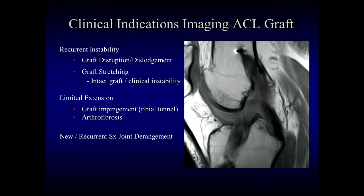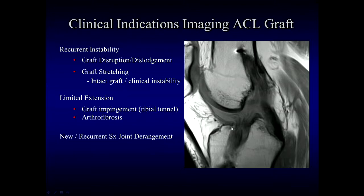Clinical indications for MR imaging after ACL reconstruction include recurrent ACL instability — seen with graft disruption or dislodgement, or with graft stretching where intact graft fibers are visible but the patient has clinical instability. Another major group includes patients with limited terminal extension of the knee, losing the last 5 to 10 degrees of extension, which may be related to anteriorly positioned tibial tunnel causing graft impingement or to arthrofibrosis or cyclops lesion. New or recurrent symptoms of joint derangement can also be assessed in the postoperative setting.